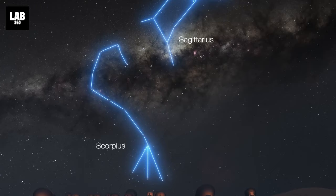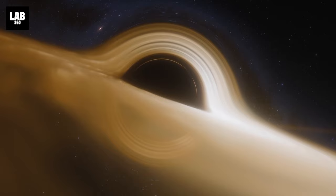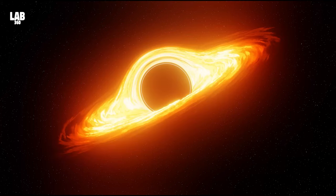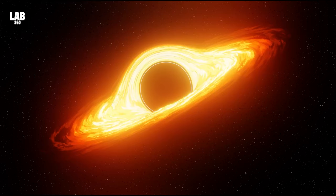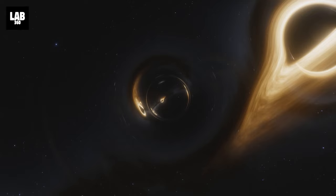Even with the supermassive black hole pointed directly at us, its gravitational effects on Earth would be negligible. Furthermore, black holes do not emit any light or radiation that could harm us. Instead, they are detected through their gravitational effects on nearby matter, such as stars and gas.